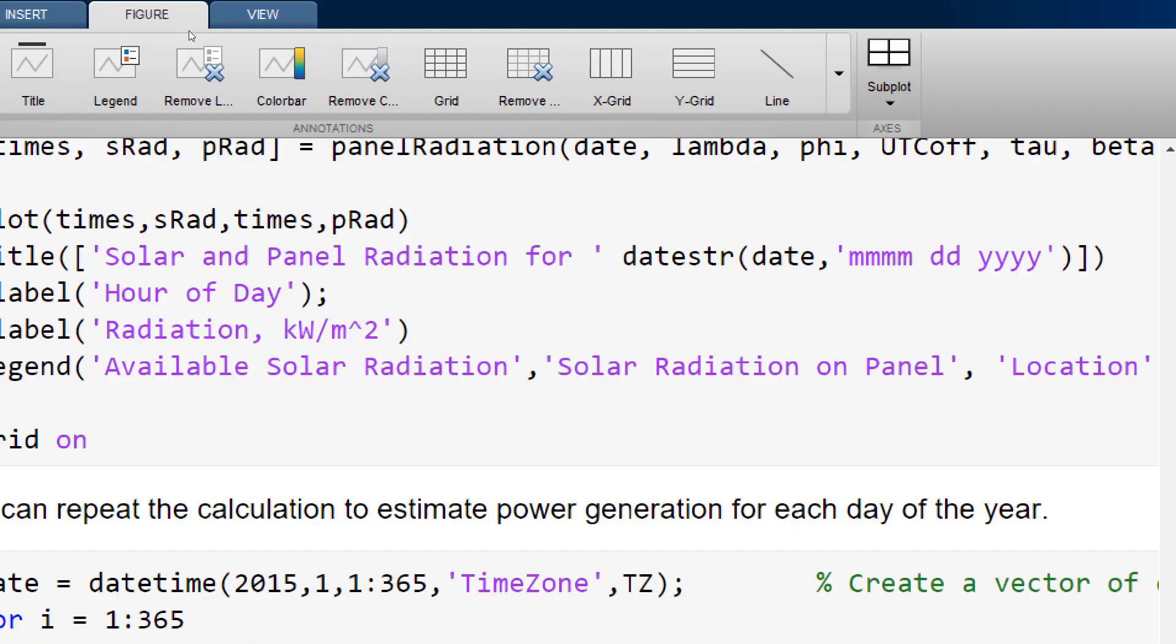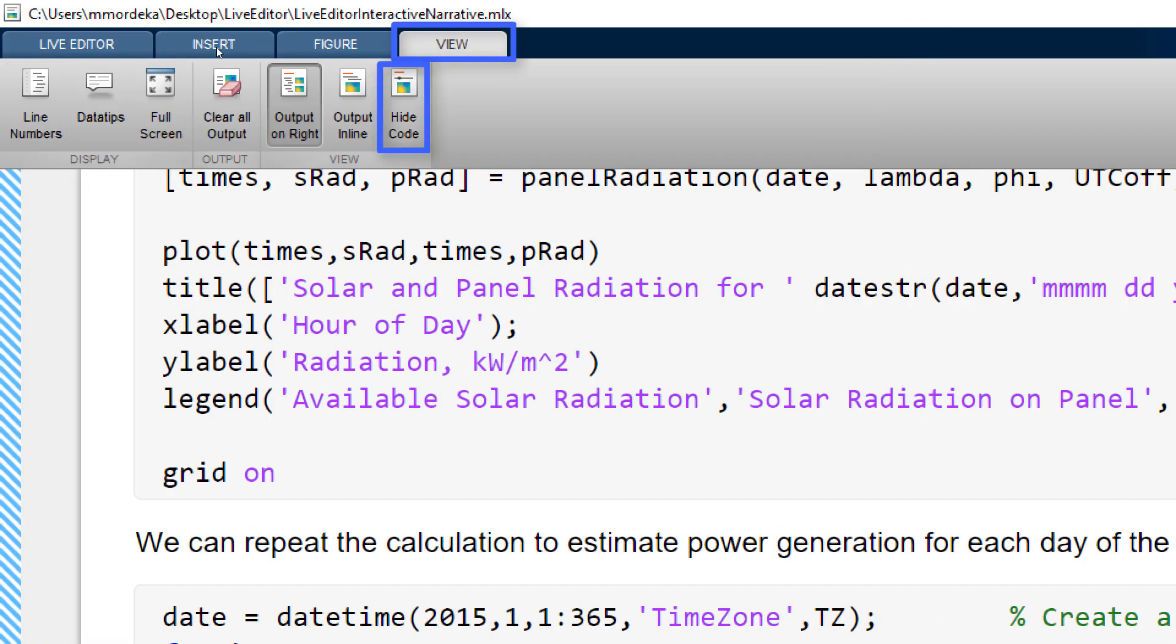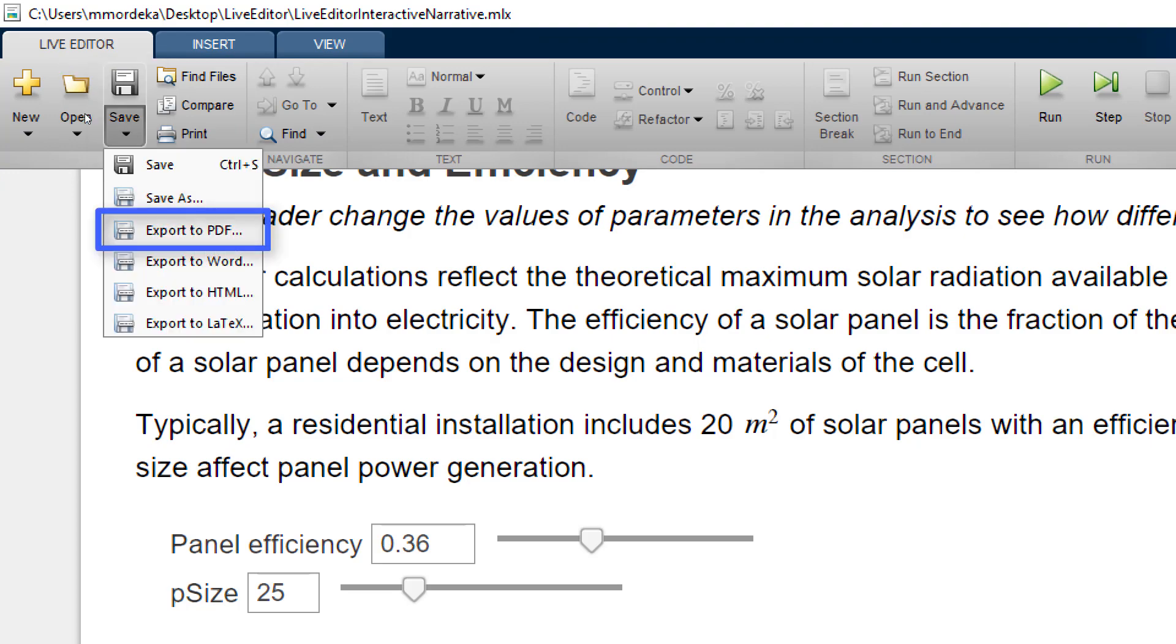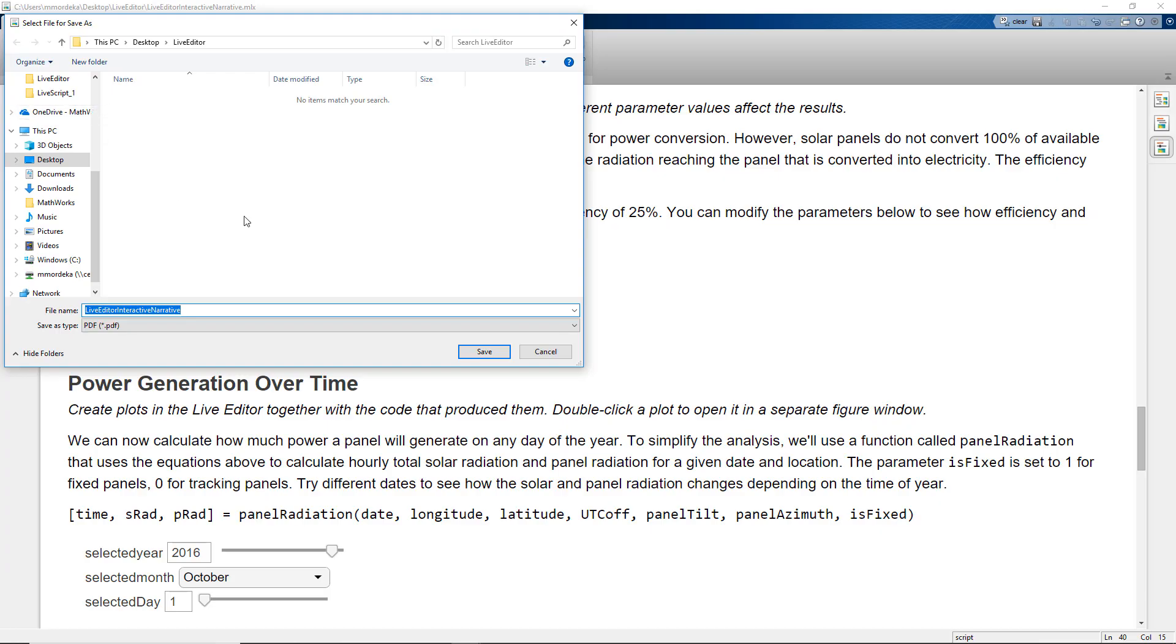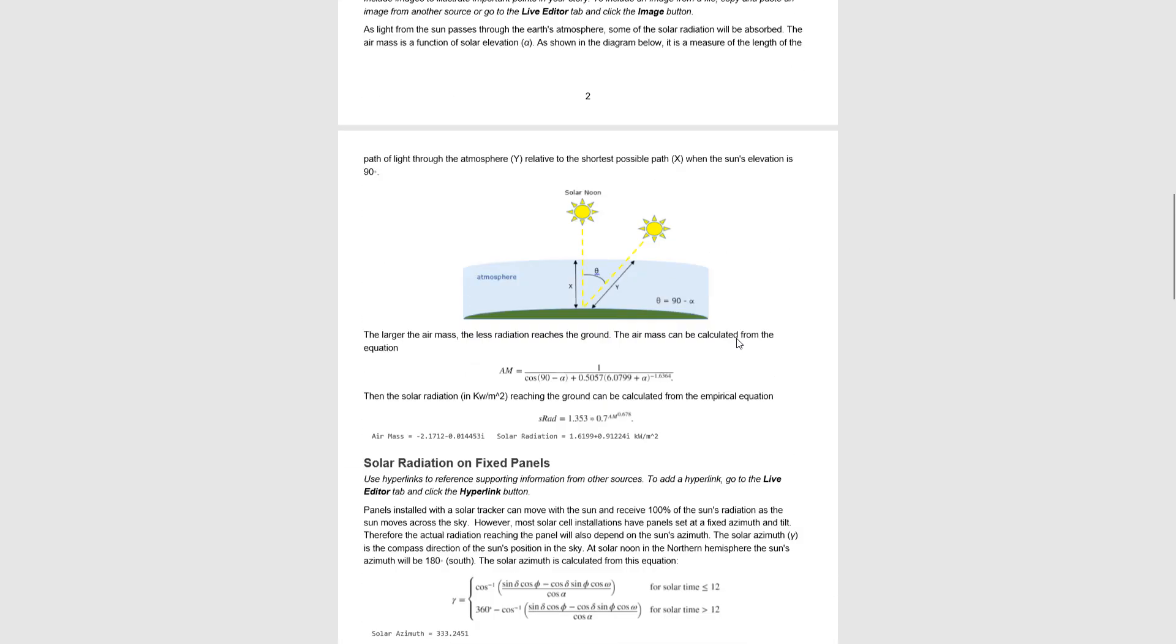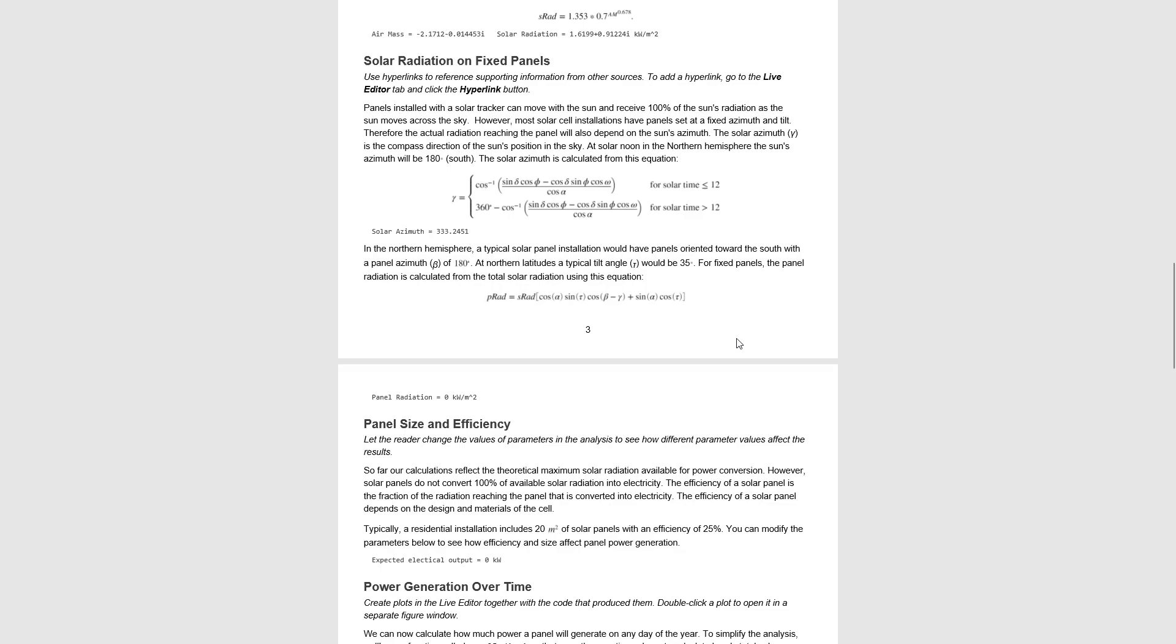All we have to do is go to View, click on Hide Code, Save, Export to PDF. Save the PDF file and we have the documentation for our story without any code as a PDF file.